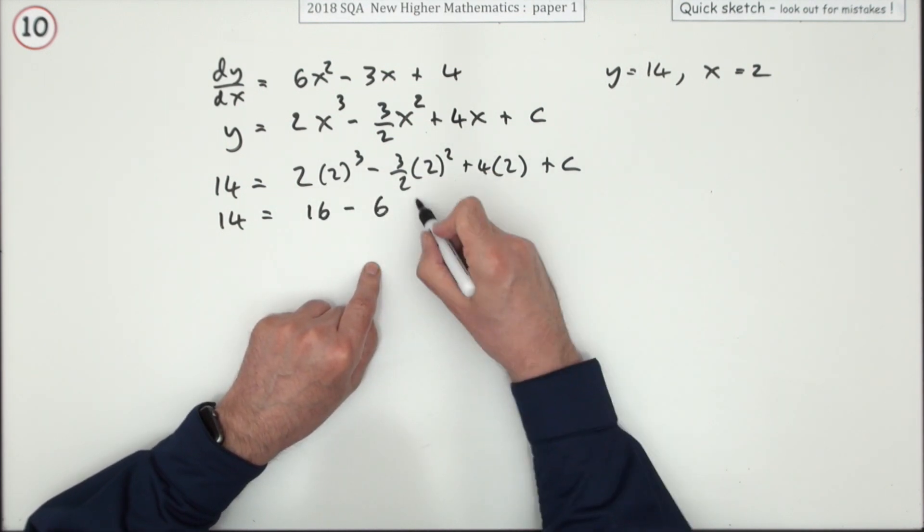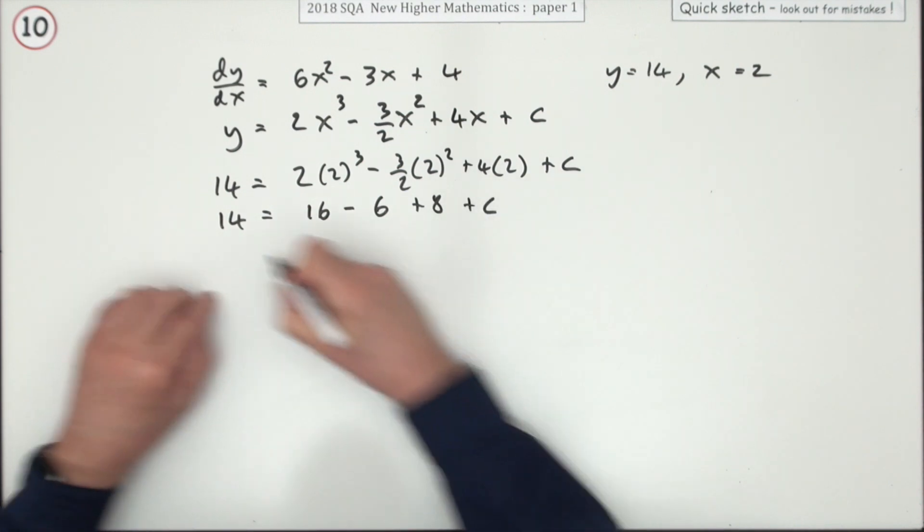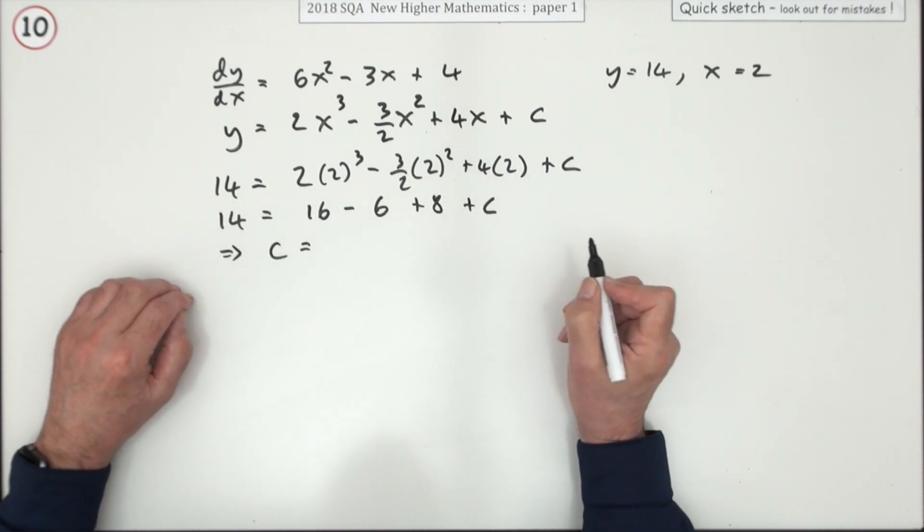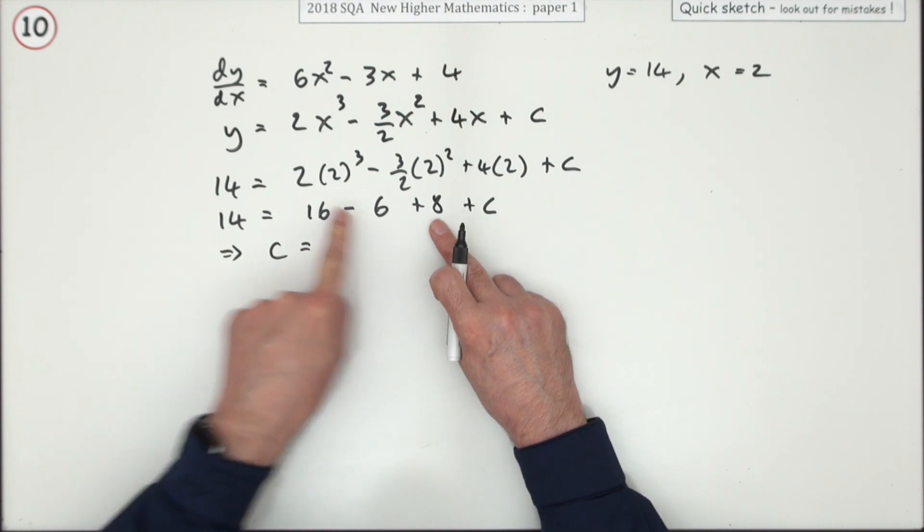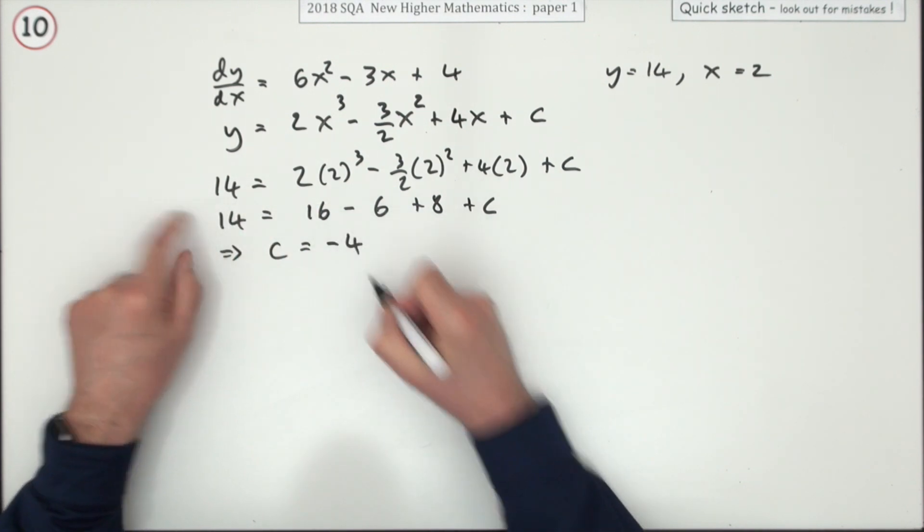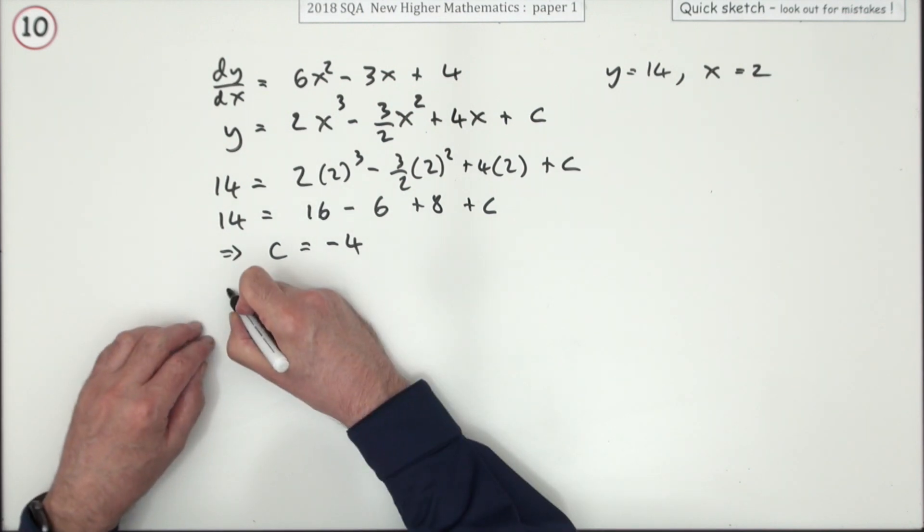So that means C is equal to, well that's 18, 10 plus 8, 18 away from that, so that's negative 4.